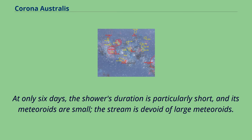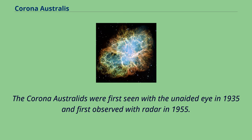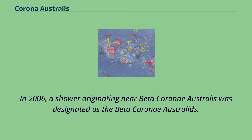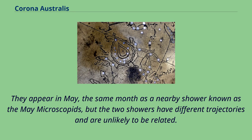The Corona Australids were first seen with the unaided eye in 1935 and first observed with radar in 1955. Corona Australid meteors have an entry velocity of 45 km per second. In 2006, a shower originating near Beta Corona Australis was designated as the Beta Corona Australids. They appear in May, the same month as a nearby shower known as the May Microscopids, but the two showers have different trajectories and are unlikely to be related.